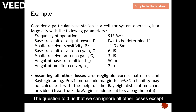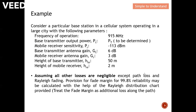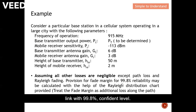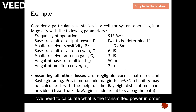The question tells us to assume all other losses can be ignored except path loss and fade margin. We must establish the communication link with a 99.8% confidence level. We need to calculate the transmit power required to ensure we can establish the link at a confidence level of 99.8%.